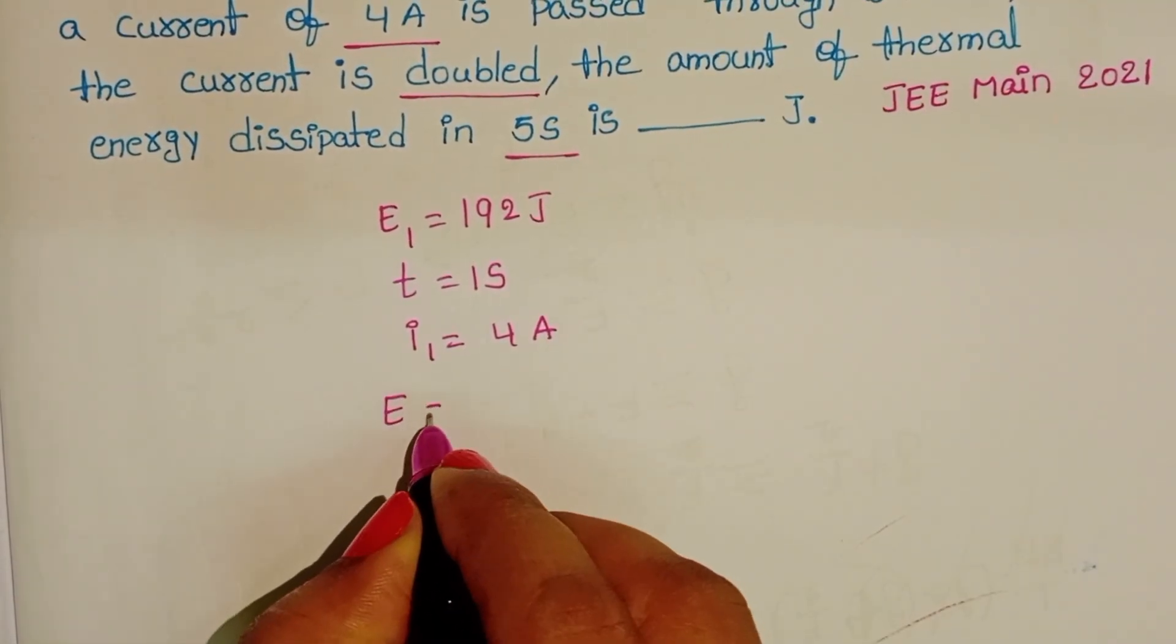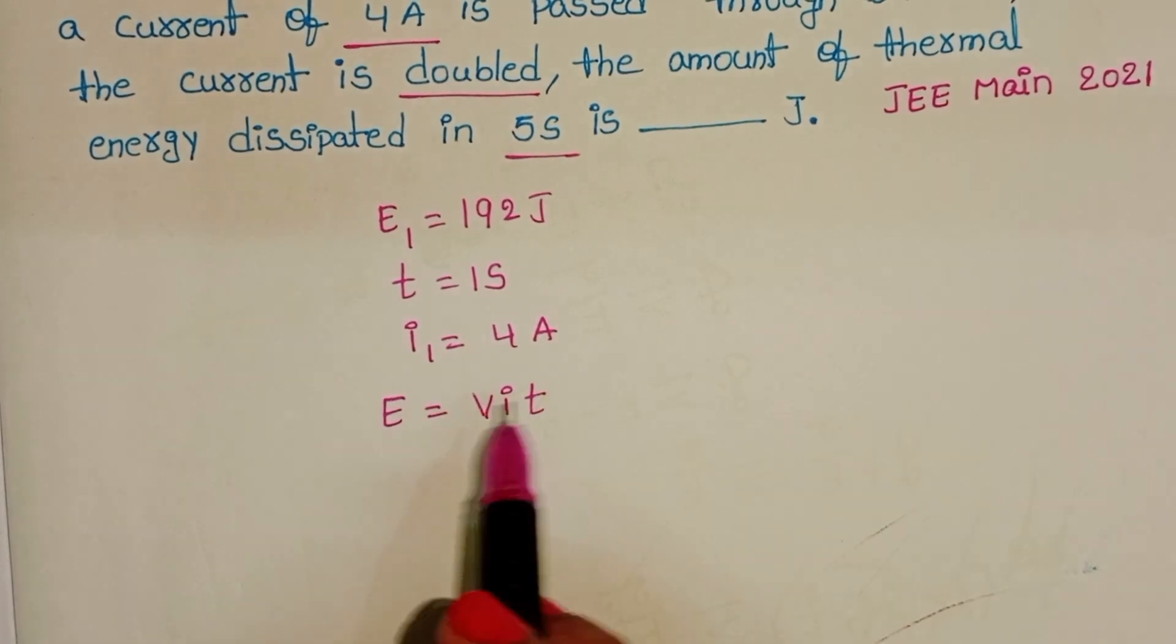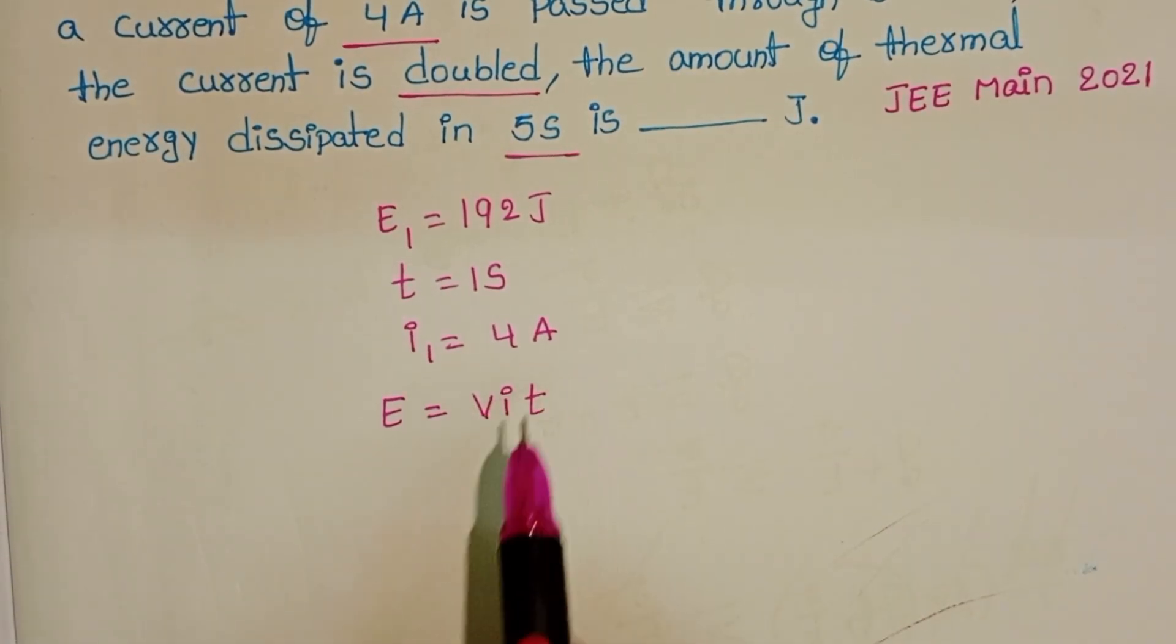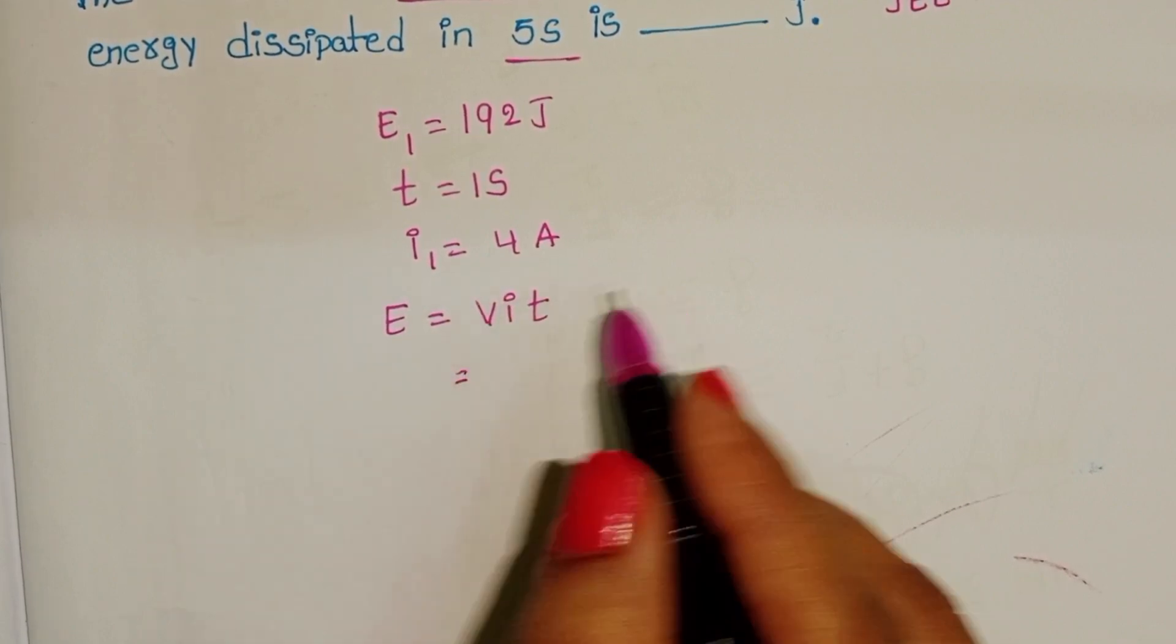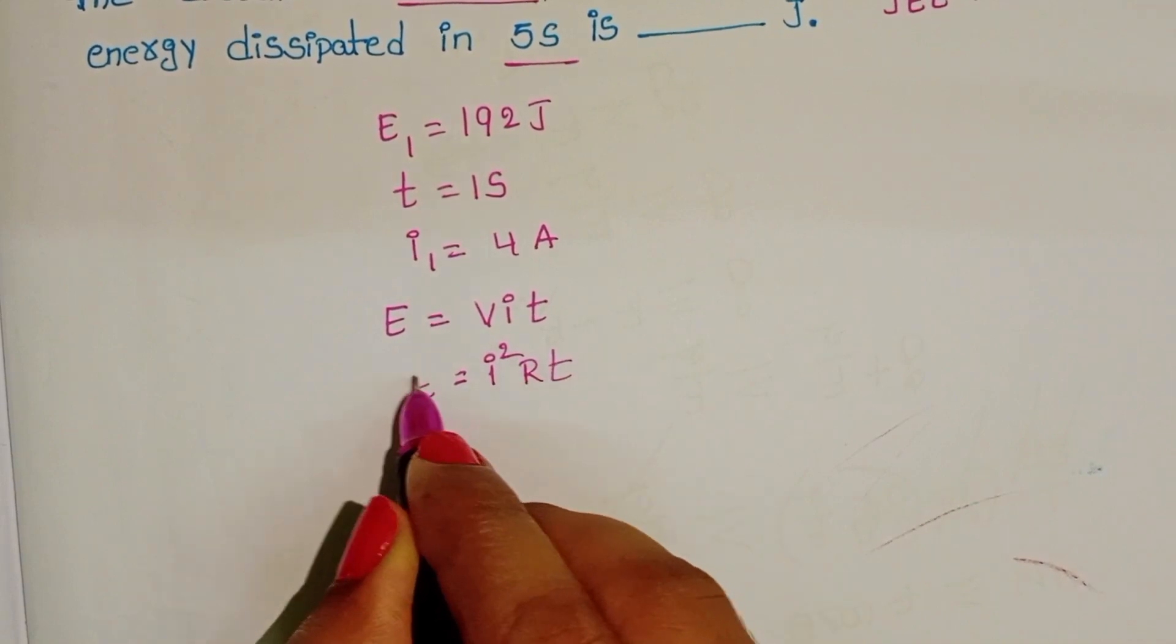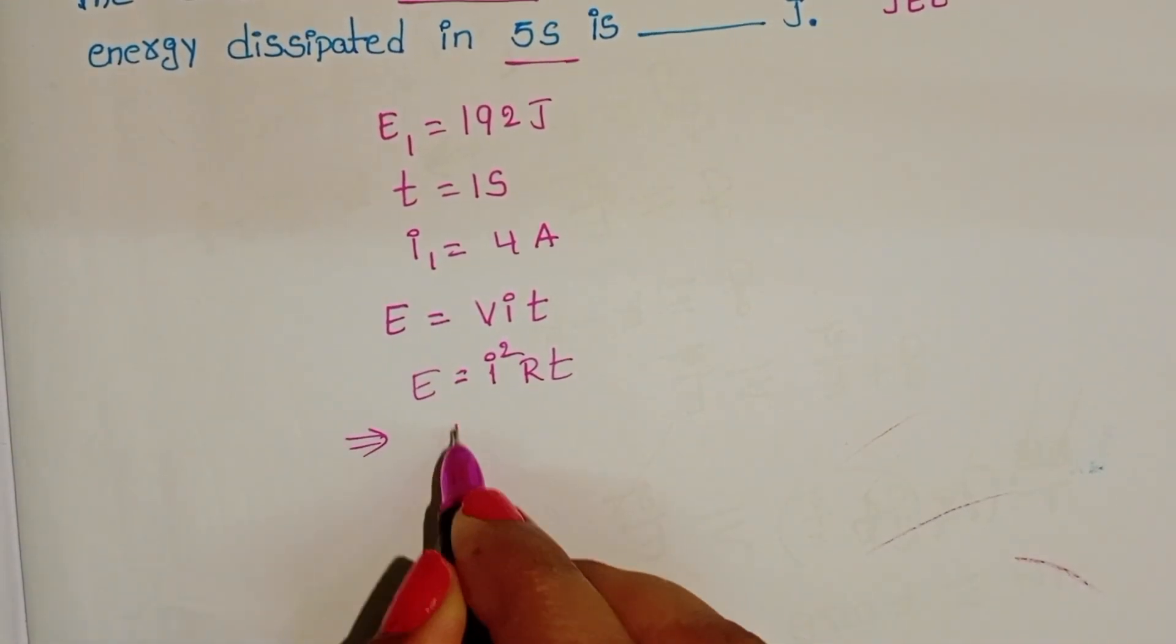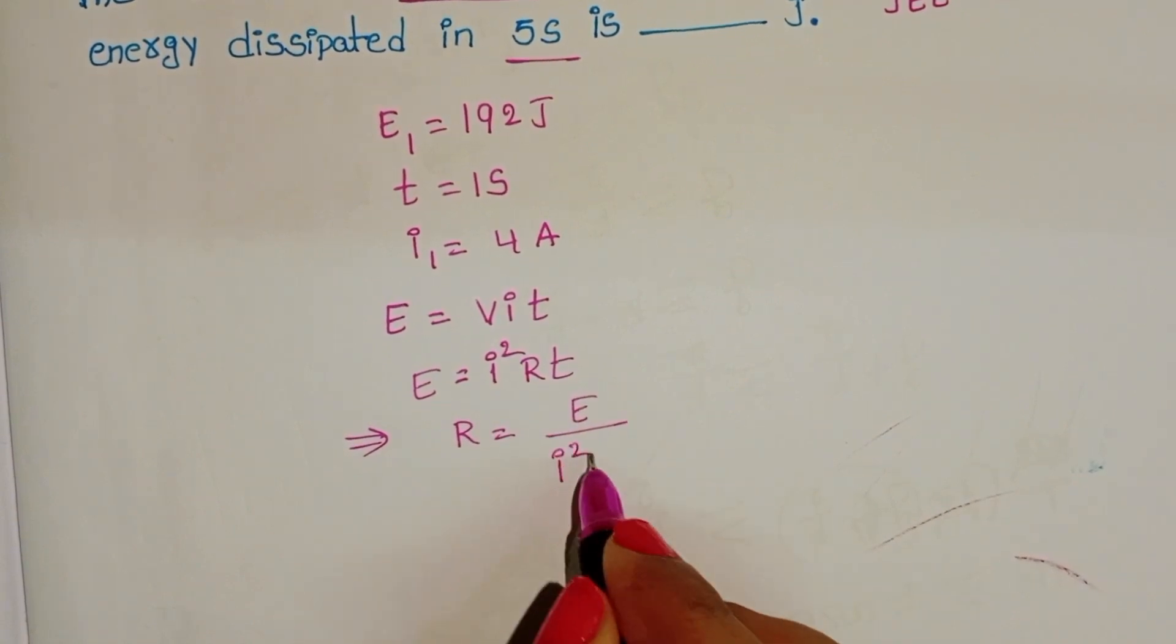We know the formula of energy: E equals VIT. But here we don't know V. In place of potential, substitute IR, then it becomes I squared RT. From this formula, resistance equals energy by I squared T.